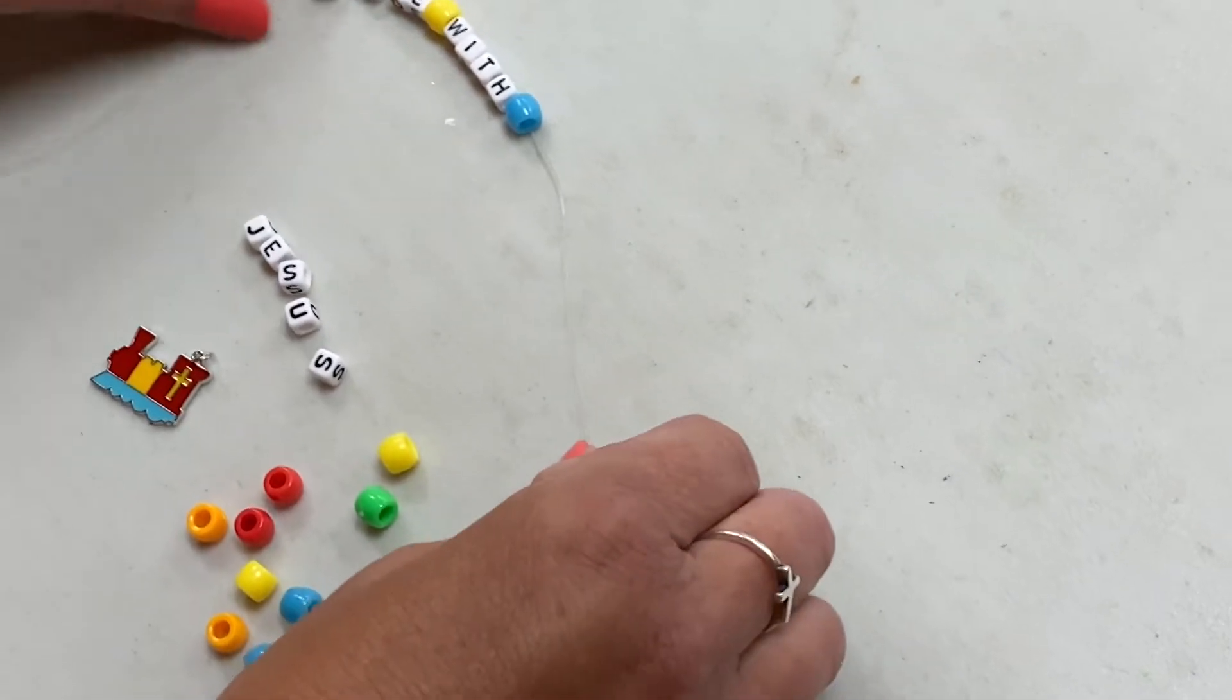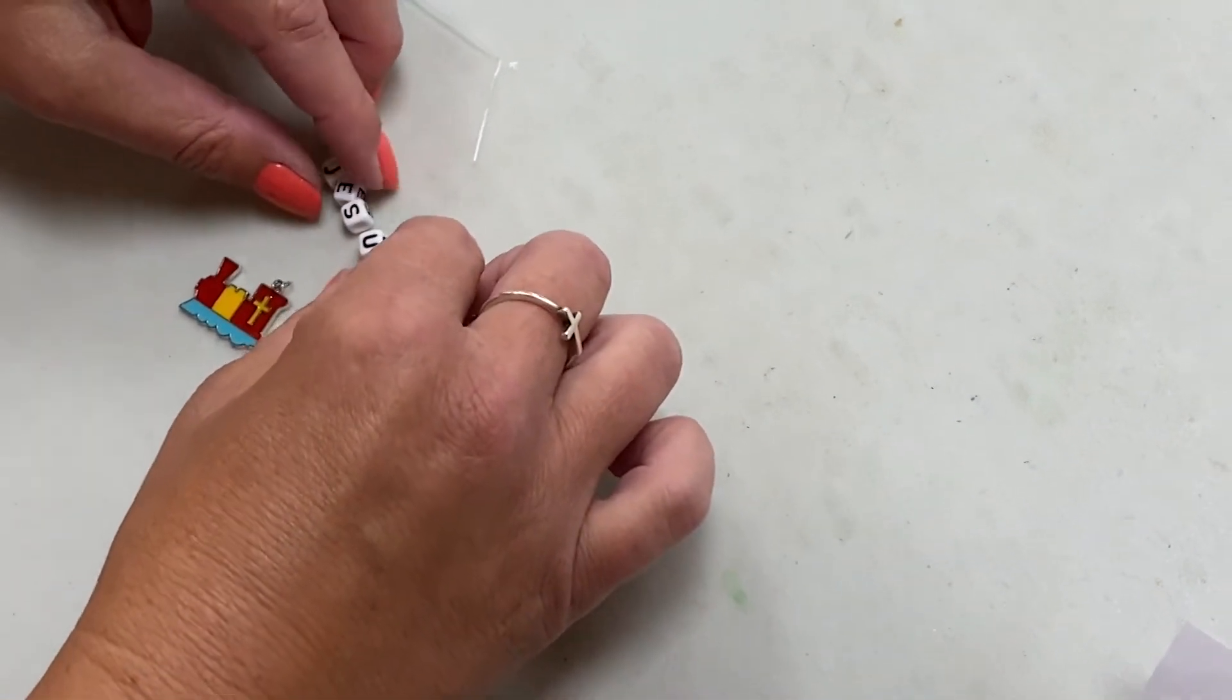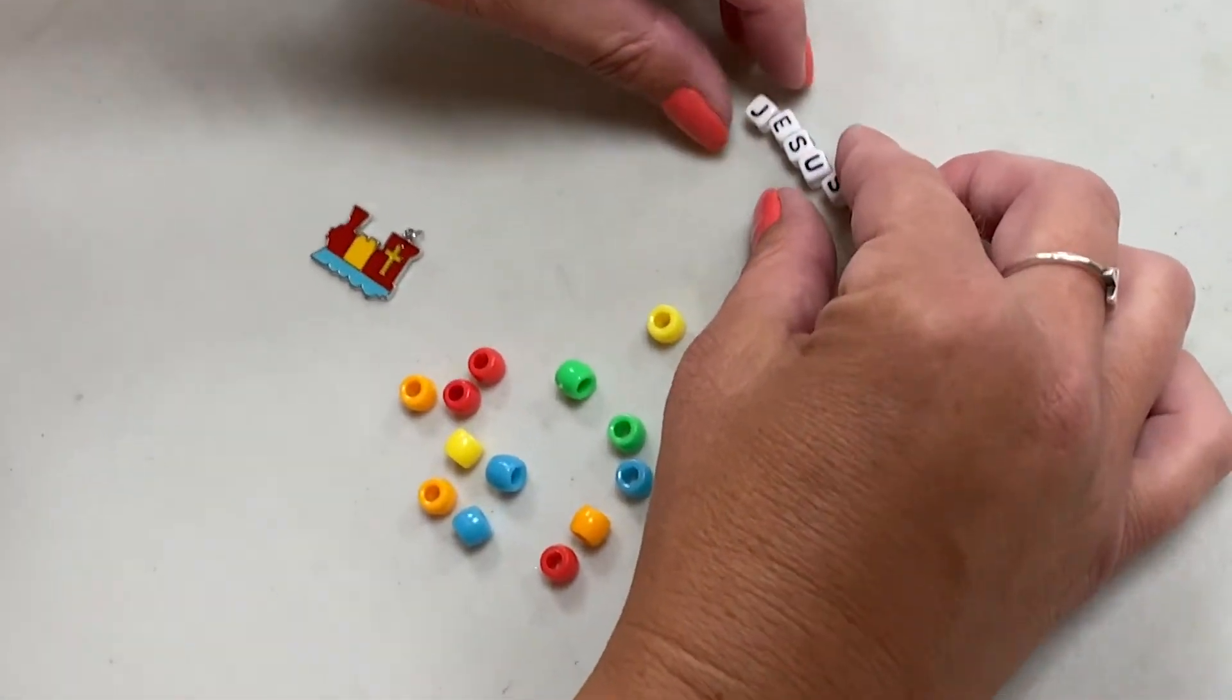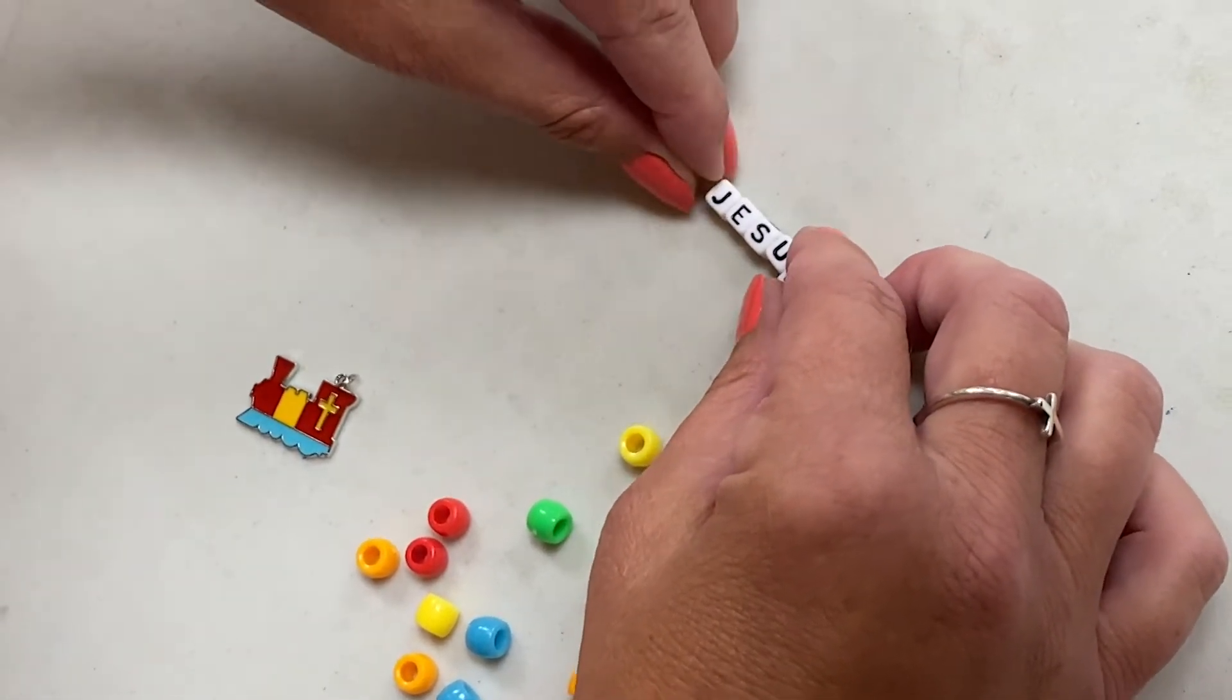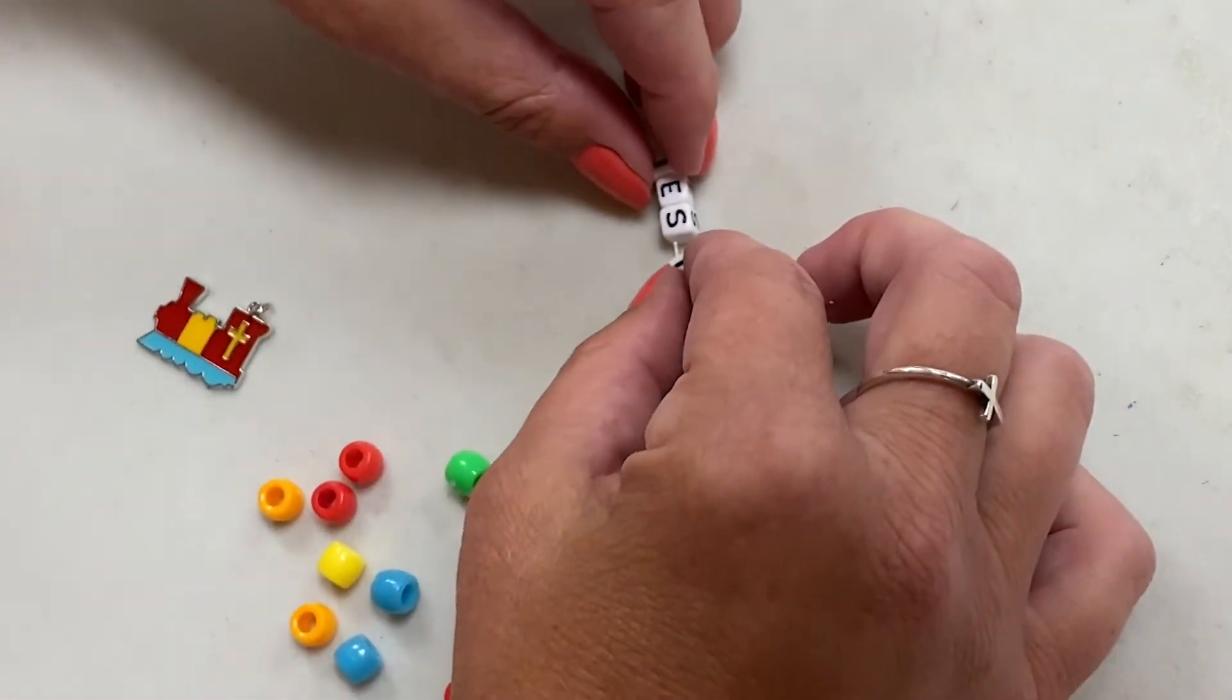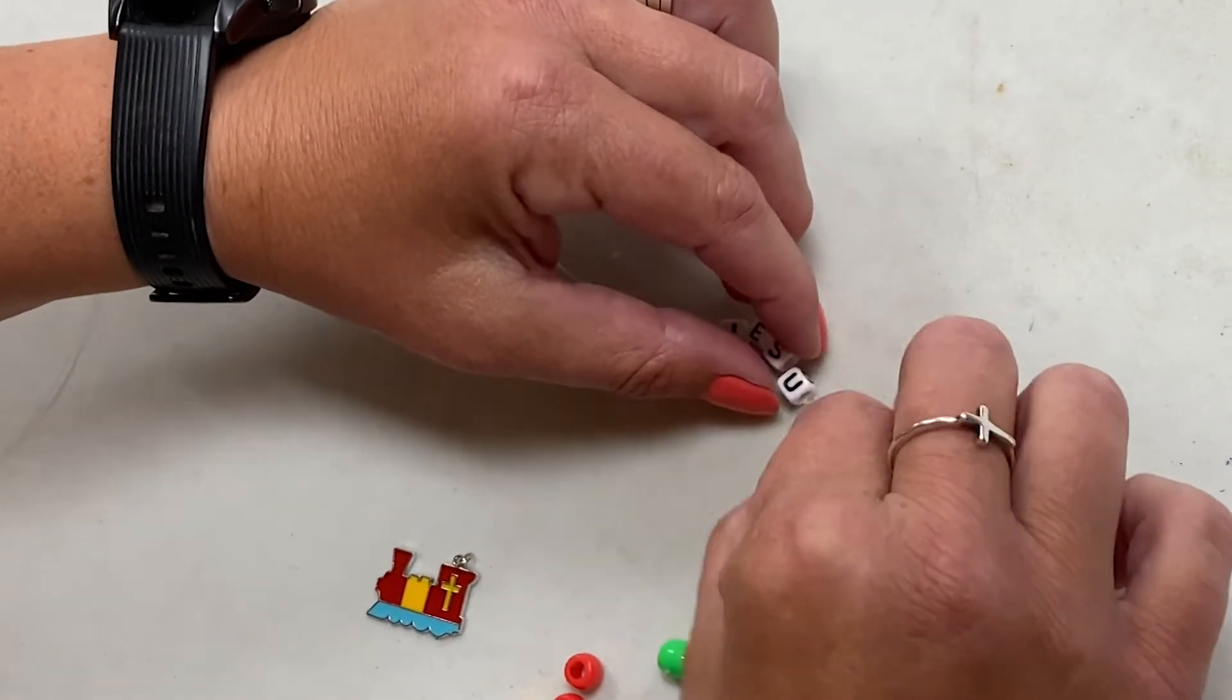Okay, and then I'll get my JESUS put together. Now it doesn't really matter, but the S does have a bottom and a top. So I'm going to feed it through my JESUS. I can get it through there. It's always that last letter.